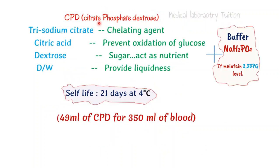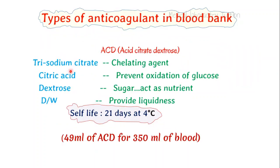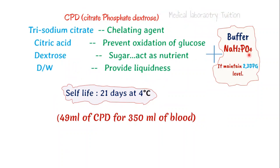Another anticoagulant is CPD — citrate phosphate dextrose. In ACD, if we add a buffer — sodium dihydrogen phosphate — it will maintain the 2,3-DPG level. During carbohydrate metabolism, lactic acid is formed, which decreases the pH of blood, and at decreased pH the 2,3-DPG level also decreases, finally affecting the RBCs. In CPD solution we can store blood for 21 days at 4°C — the same as ACD — but we see more living RBCs in their normal state. For that we take 49 ml of CPD for 350 ml of blood.